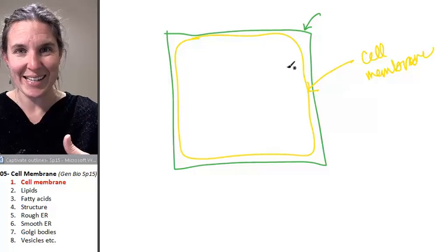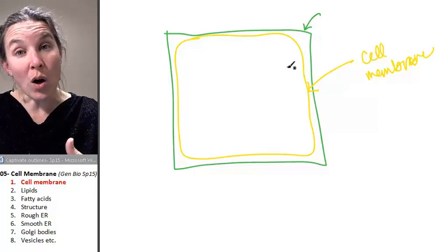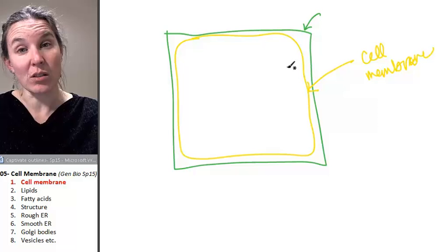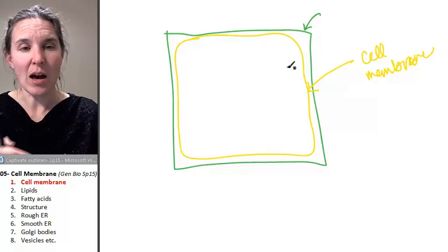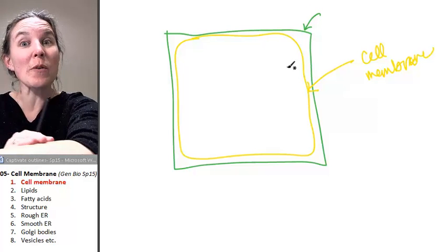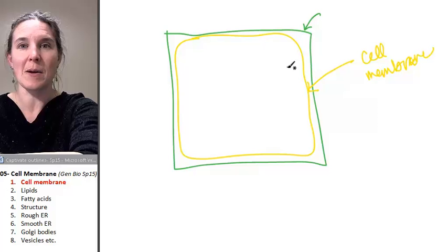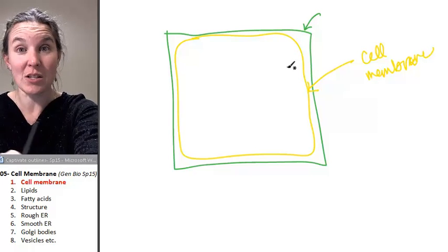It's farther in. The cell wall is superficial to the cell membrane. Your skin is superficial to your muscles. Your muscles are deep to your skin.